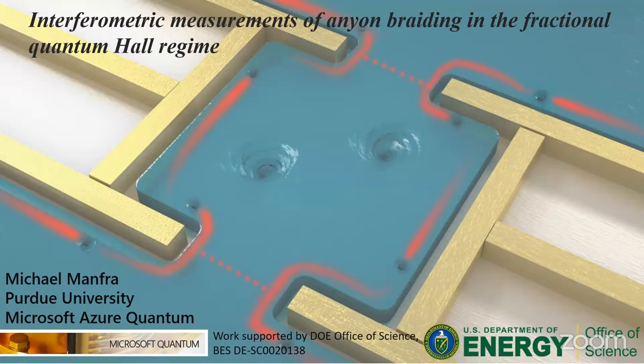And most recently, his most exciting thing, unfortunately, is not Majoranas in Microsoft, but rather having made enormous progress in being able to see anionic braiding, which has been a holy grail in condensed matter for a few decades.